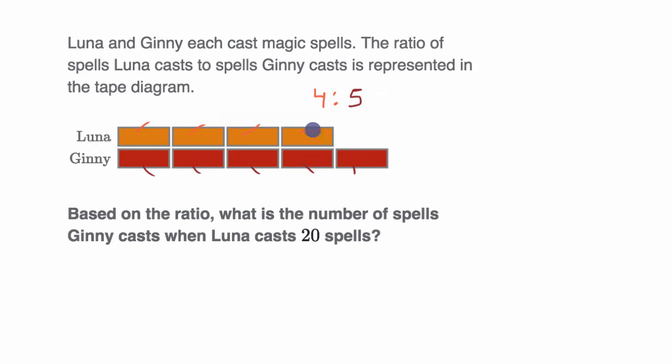But if Luna casts 20 spells, well to go from four to 20, we had to multiply by five. And so we would do the same thing with the number of spells Ginny casts. You'd multiply that by five, so it's 25. So four Luna spells for every five Ginny spells is the same thing as 20 Luna spells for every 25 Ginny spells. And so how many spells does Ginny cast when Luna casts 20 spells? She casts 25. And we're done.